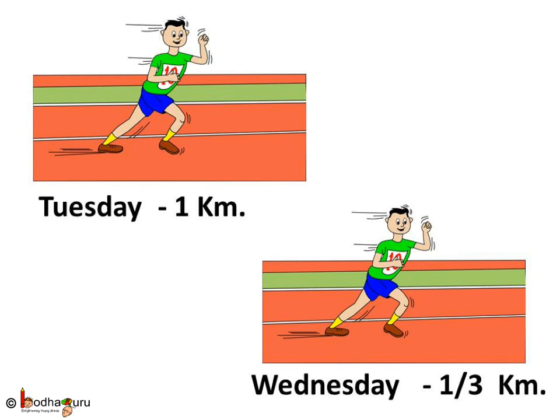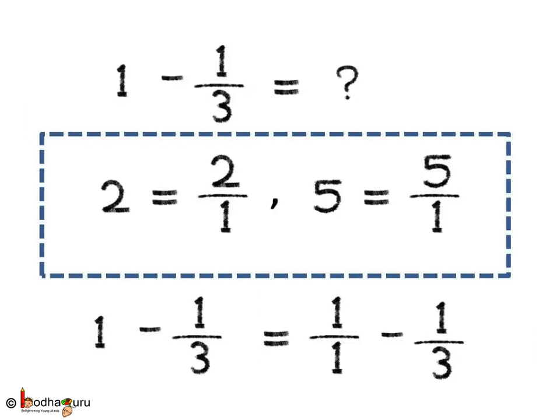Let us take another example. Aman ran one kilometer on Tuesday and one by three kilometer on Wednesday. How many more kilometers did he run on Tuesday than on Wednesday? We need to subtract one by three from one, but how to subtract a fraction from a whole number? You know, every whole number can be written with one as the denominator.